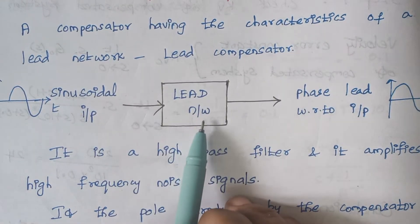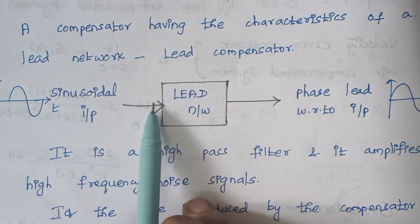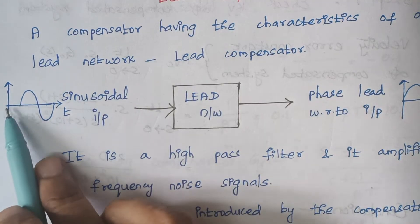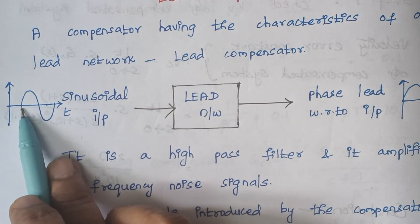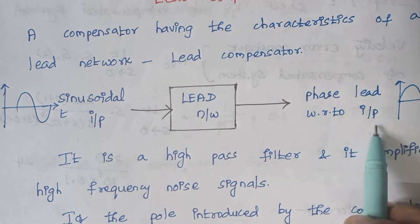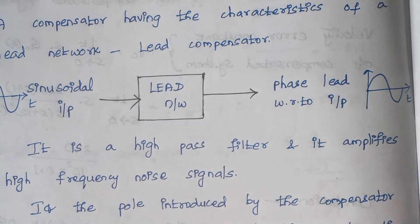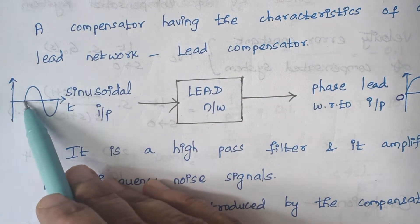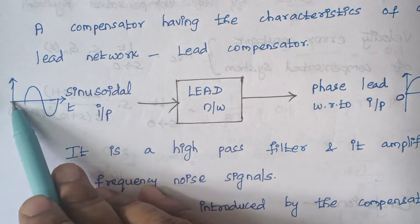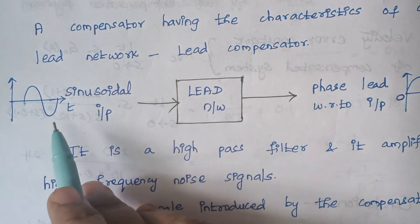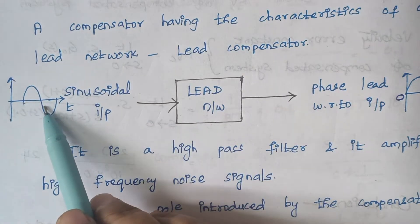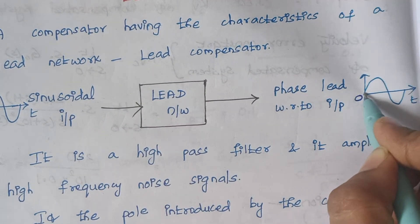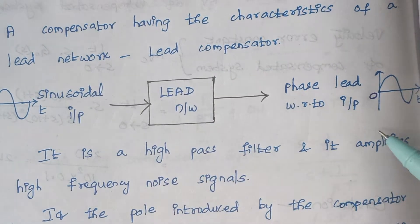Assume we are having a lead network and the type of input being given is a sinusoidal input. You see our sinusoidal input doesn't start from the origin — it is starting at some other point. The respective output diagram shows that the output exactly starts at 0, meaning the input has some phase lag; it doesn't start at 0, it is lagging at some angle. But when this input is given to a lead network, the respective output is leading — it exactly starts at 0. So this type of network is known as a lead network.